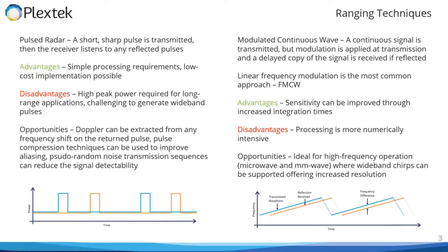Generally with pulsed radar we don't just transmit a single pulse but a train of pulses to improve sensitivity. However, this introduces a challenge: you don't necessarily know whether the pulse you just received came from the most recently transmitted pulse or an earlier one. To reduce this ambiguity due to the aliasing effect, we can implement pulse compression techniques, changing the characteristics of each pulse to remove some level of uncertainty. This is a good approach if you are looking to detect fast-moving objects which are a long way away, as these are the main factors which become ambiguous with aliasing from the pulse train.